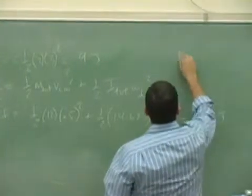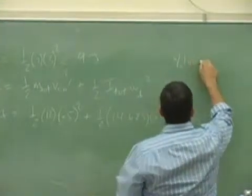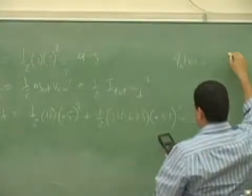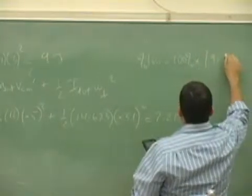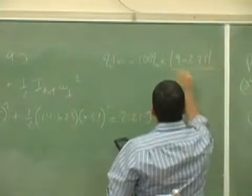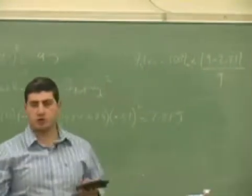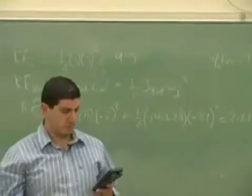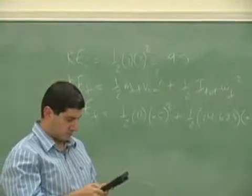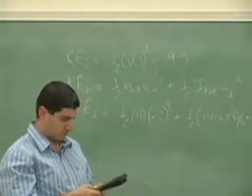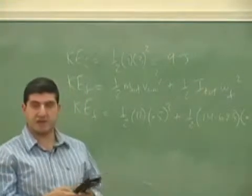So percent loss: 9 minus 2.21 over 9. 75.5% loss.